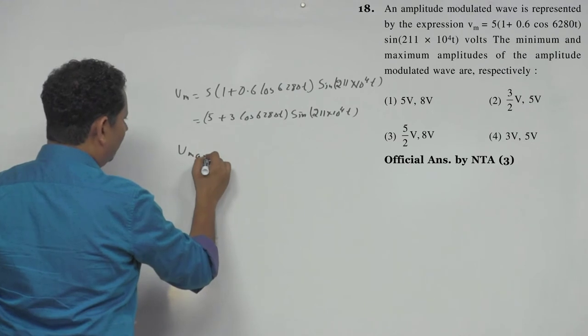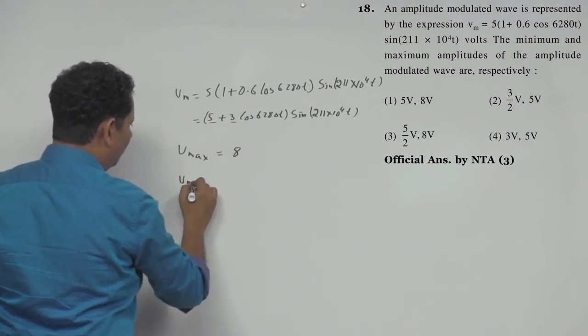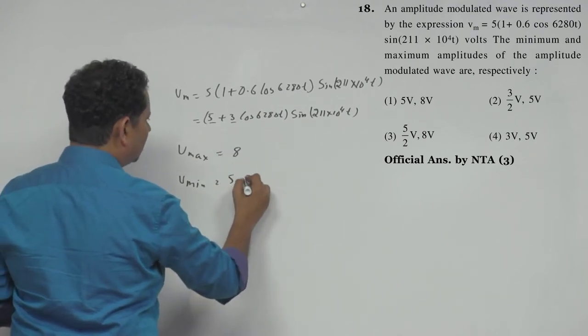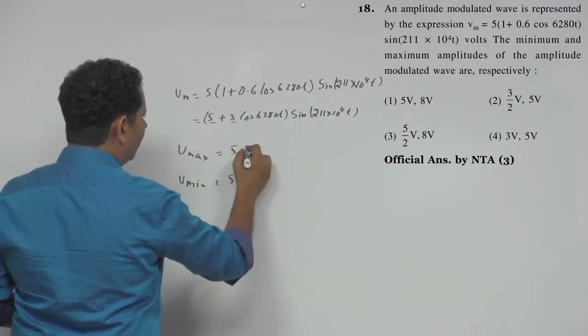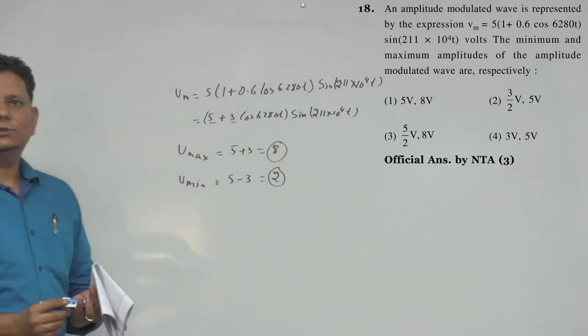Maximum here will be value 8 and vminimum will be 5 minus 3. This will be 8 and this will be 2, so you have 8 or 2. If we look at the four options...